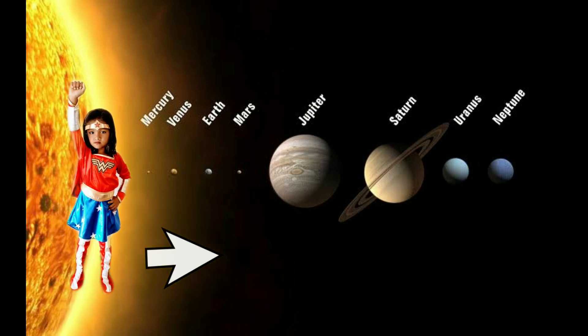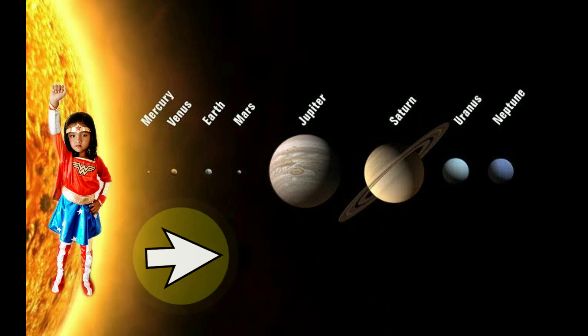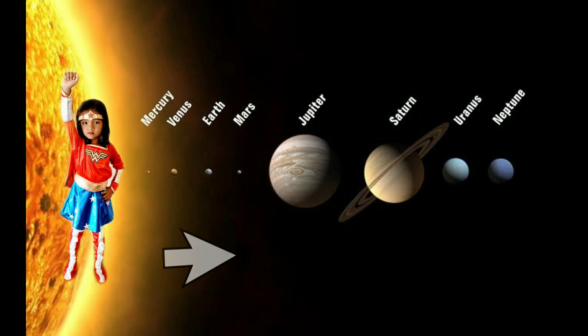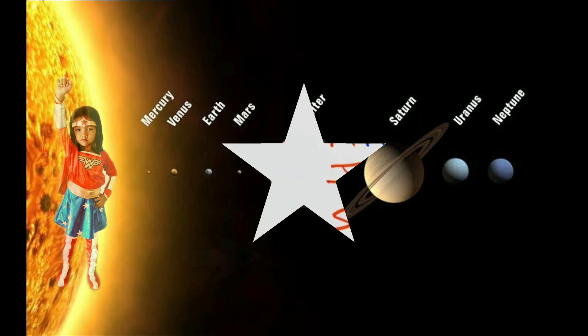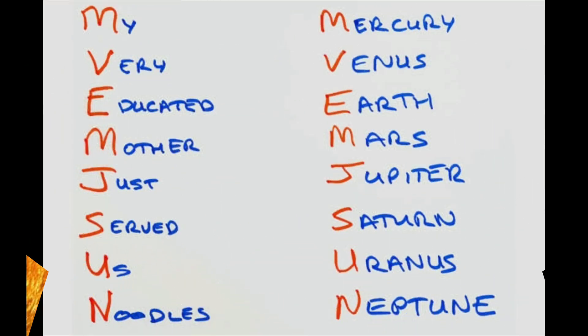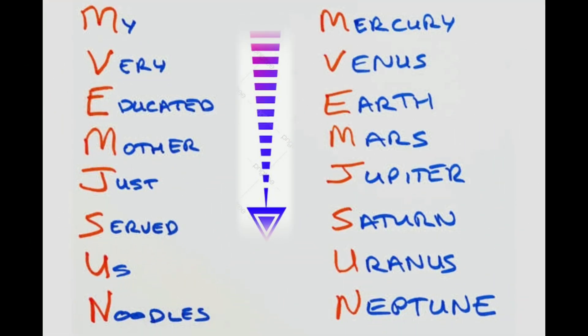So, the easy sentence to remember is: My very educated mother just served us noodles. This sequence is as per nearest to the Sun.